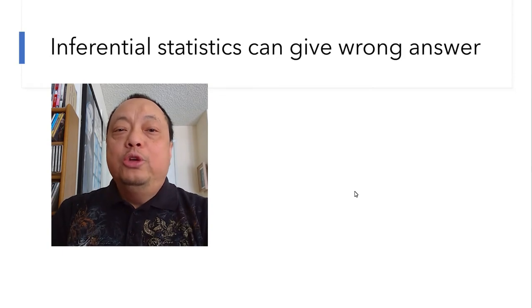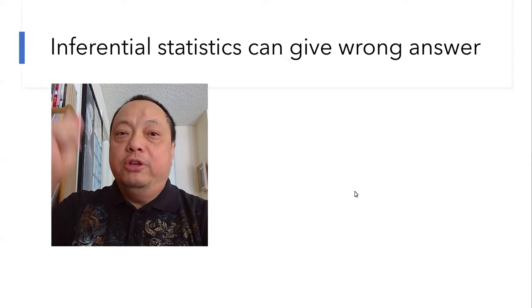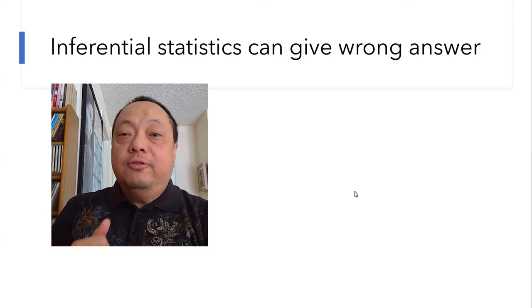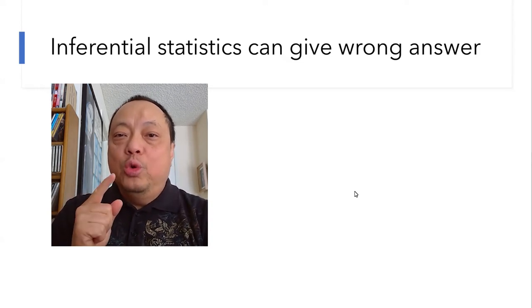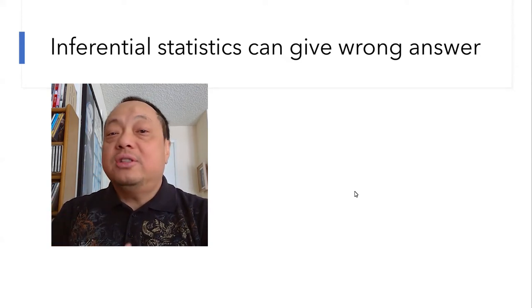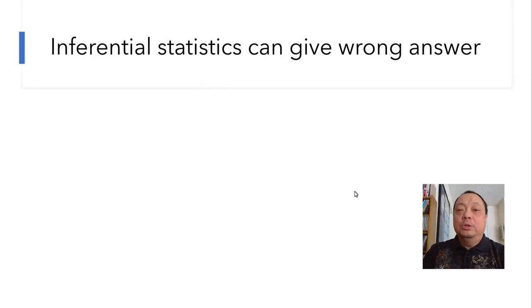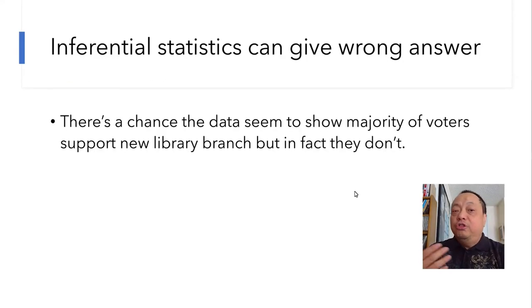Also, when we do statistics, we generalize from a sample to a population. Therefore, even if we do everything correctly by the book, there's always a chance that the answer is wrong. For our example, there's always a chance that our data show the majority of voters support building a new library branch, but in fact, they don't.